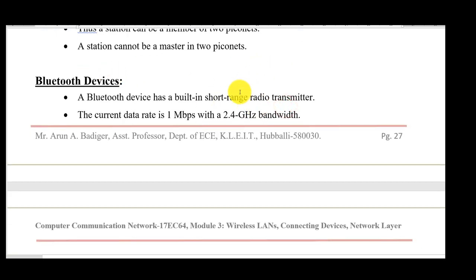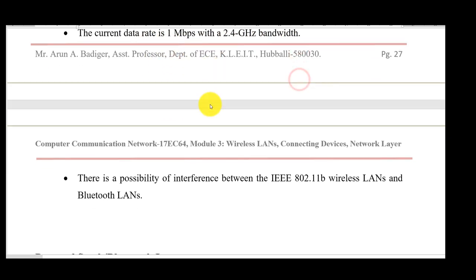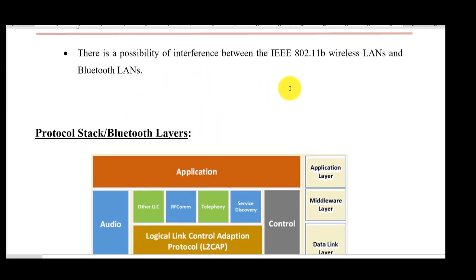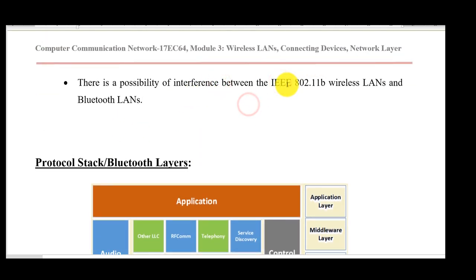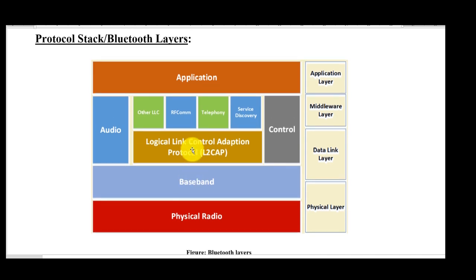Bluetooth devices operate in the 2.4 GHz ISM band and support a data rate of 1 Mbps. One specialty of Bluetooth is that it can be paired with Wi-Fi — specifically the IEEE 802.11b standard — so that Bluetooth data can be directly shared over Wi-Fi. This is one of Bluetooth's key advantages.